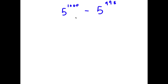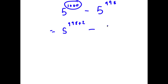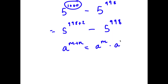So in this problem, I have 5 to the power of 1,000 minus 5 to the power of 998. To solve this, I'm going to first rewrite 1,000 as 998 plus 2. So now I have 5 to the power of 998 plus 2 minus 5 to the power of 998. Using the rule a to the power of m plus n equals a to the power of m times a to the power of n, 5 to the power of 998 plus 2 equals 5 to the power of 998 times 5 to the power of 2.